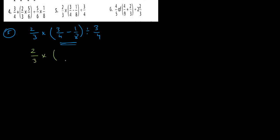So: 2 upon 3 multiply — the LCM of 4 and 8 is 8. Four twos are eight and three twos are six, minus eight ones are eight and one as it is — divide 3 upon 4. So this is 2 upon 3 multiply 6 minus 1 is 5, that is 5 upon 8.